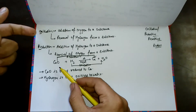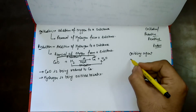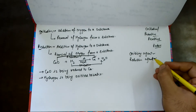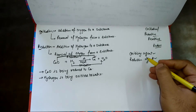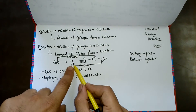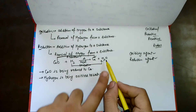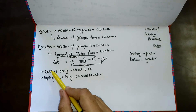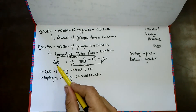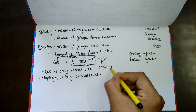We have four overall terms: oxidation, reduction, oxidizing agent, and reducing agent. An agent is something that helps produce the necessary output. With the help of copper oxide, oxygen is passed to the hydrogen. So copper oxide is the one that gives away oxygen to the hydrogen, and we call copper oxide the oxidizing agent. The substance that undergoes reduction is also called the oxidizing agent.